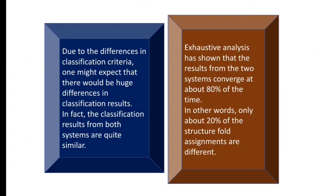Now let's talk about results. The difference in results is that mostly 80% of results are the same between SCOP and CATH, although the classification points are different. The results are largely the same.